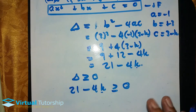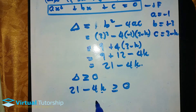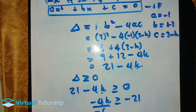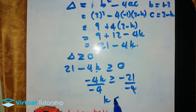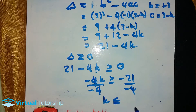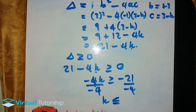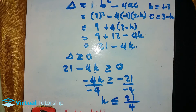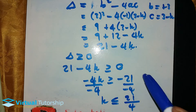So we transpose: negative 4k is less than or equal to negative 21. Divide both sides by negative 4 — remember, dividing by a negative number changes the direction of the inequality sign. So k is less than or equal to positive 21 over 4.